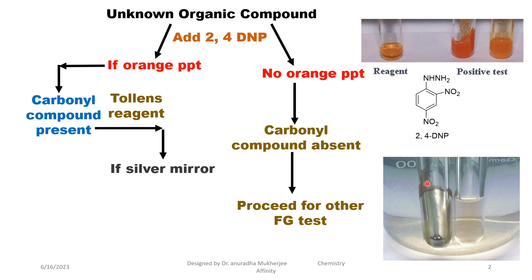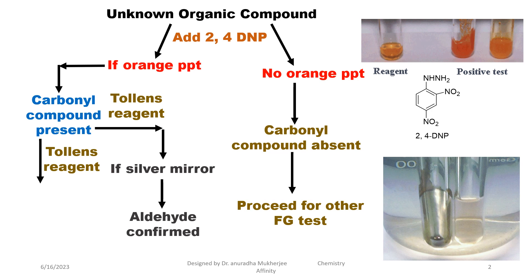Now after adding Tollens' reagent, if we get a silver mirror like this, that means this carbonyl compound is an aldehyde. But after adding Tollens' reagent, if you are not getting any silver mirror or any gray precipitate after heating, then the carbonyl compound is a ketone.